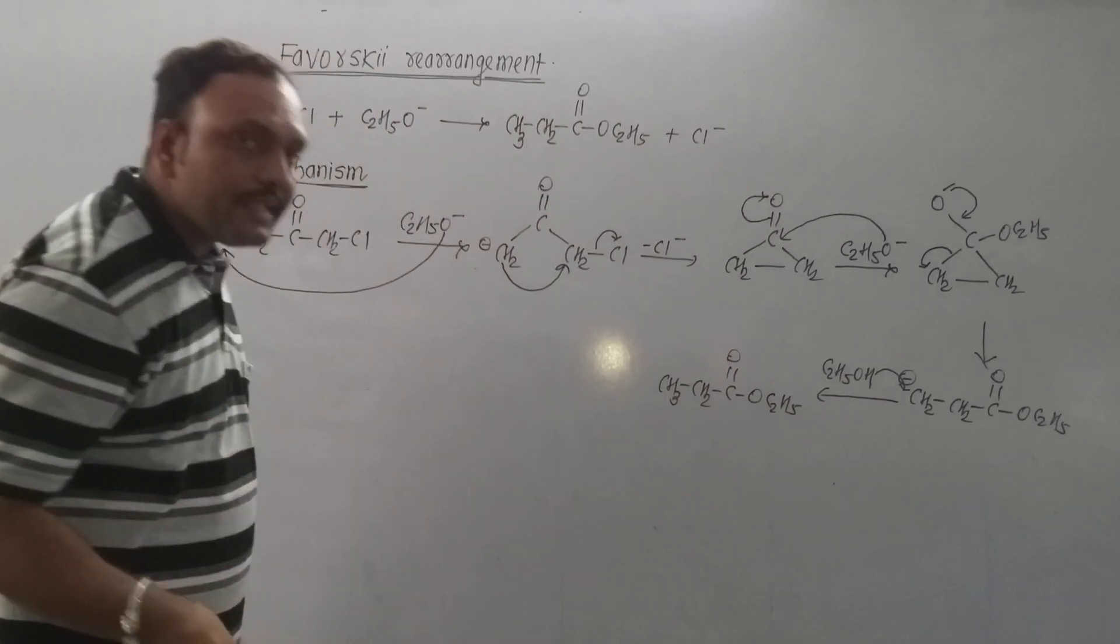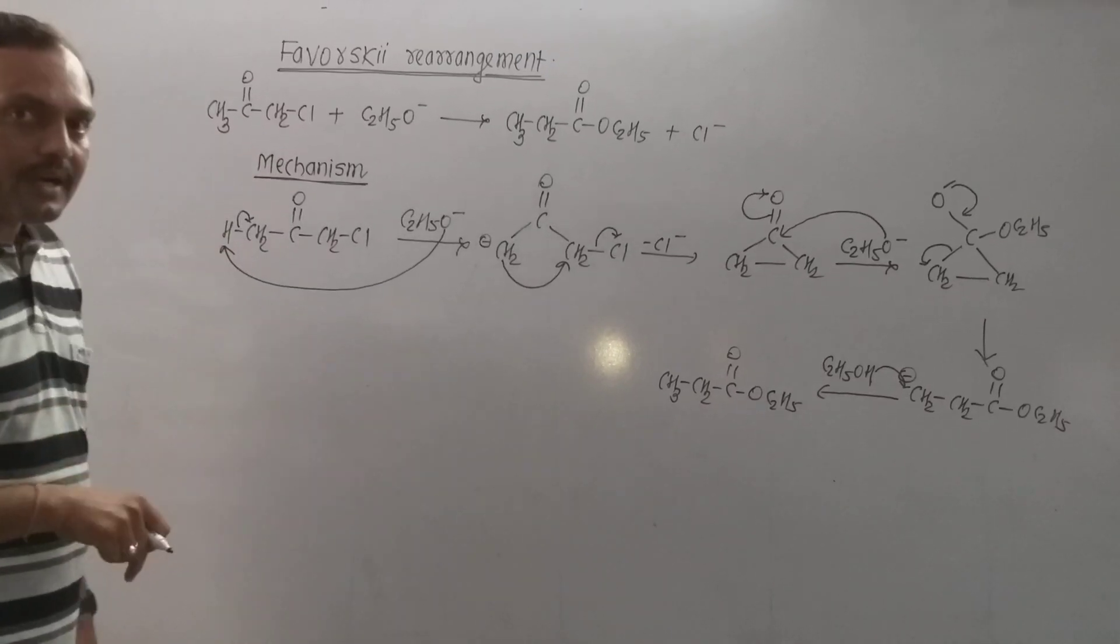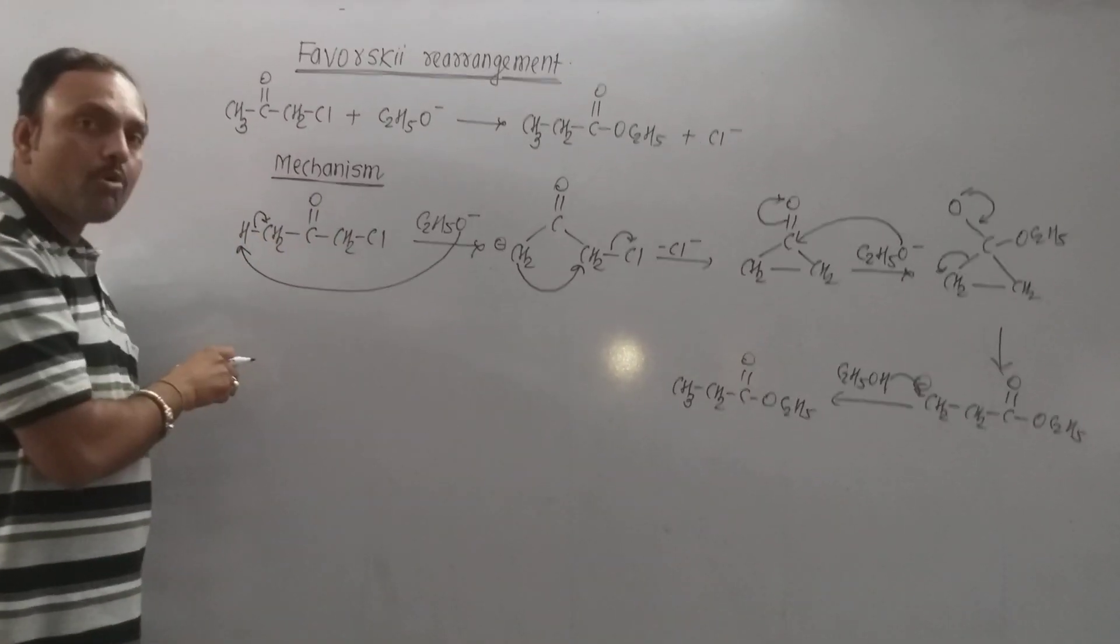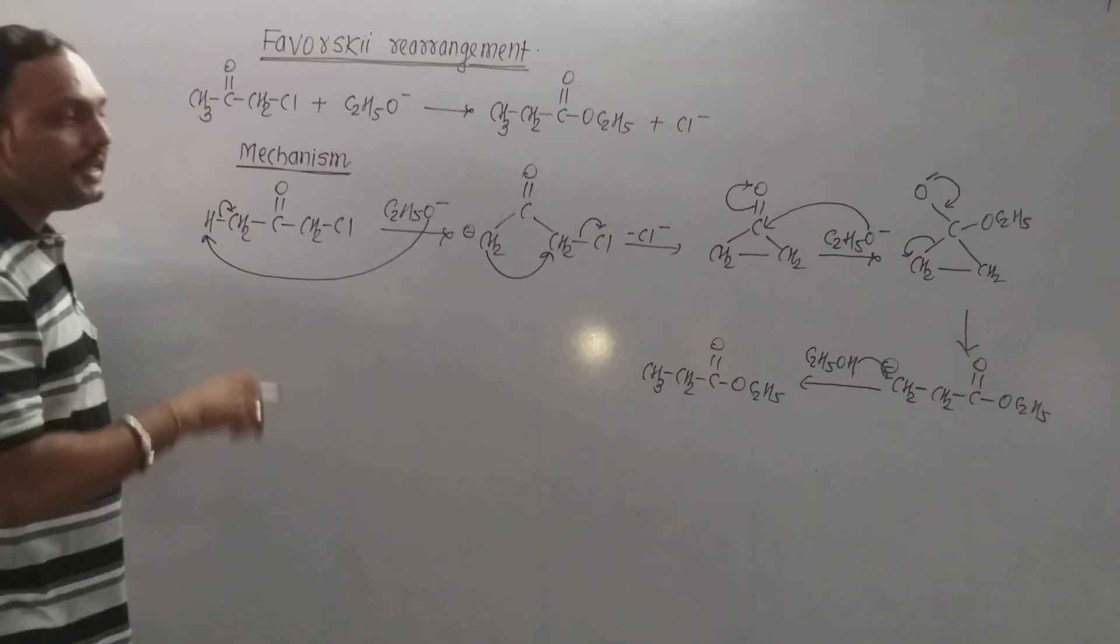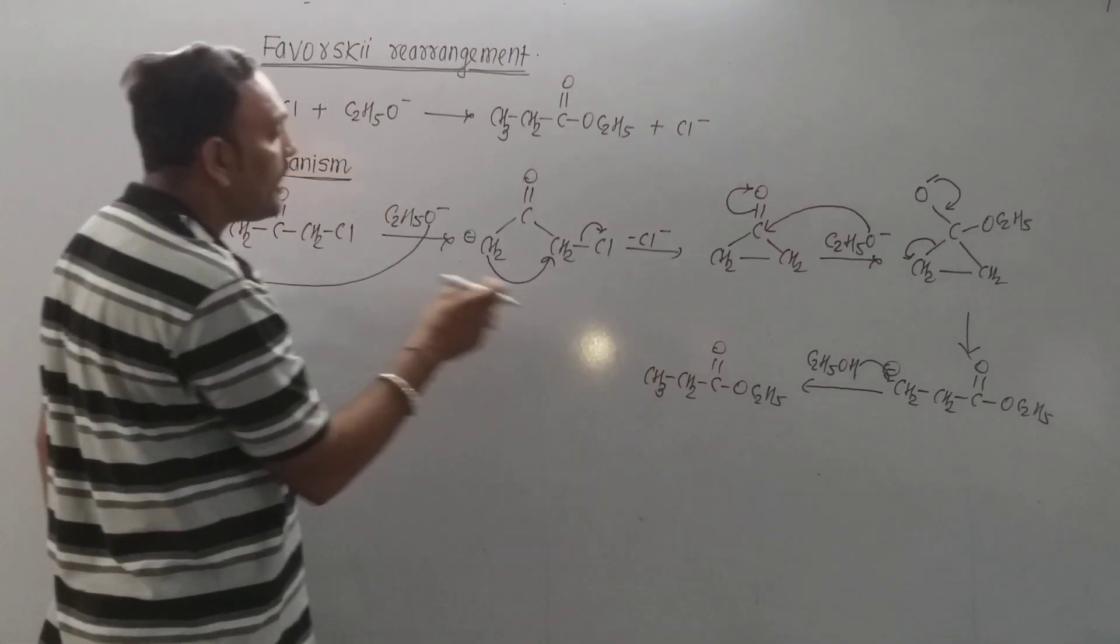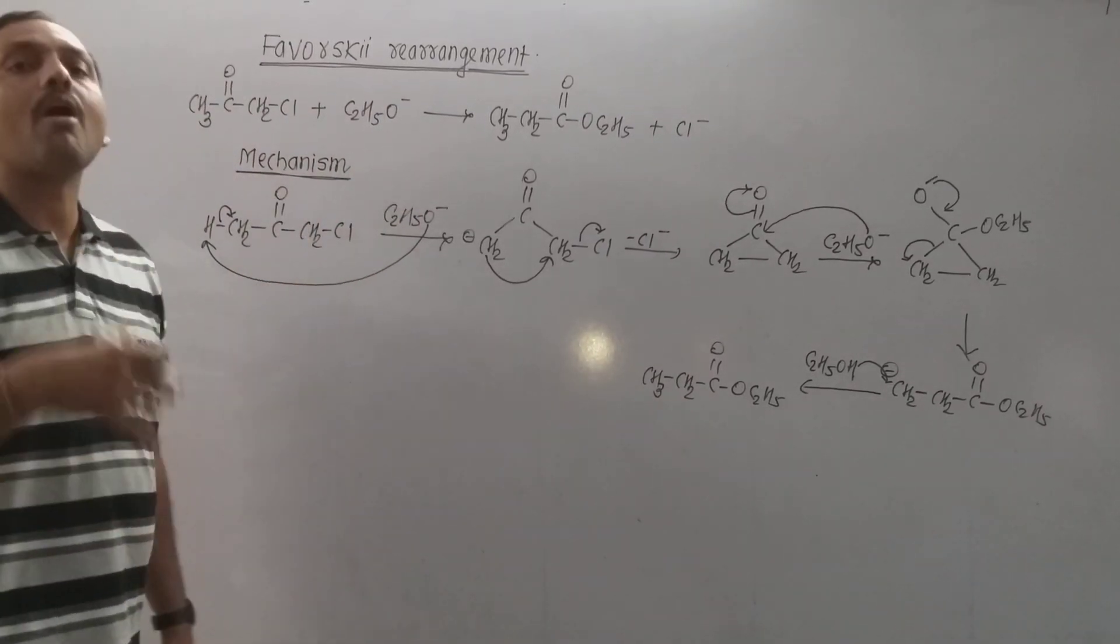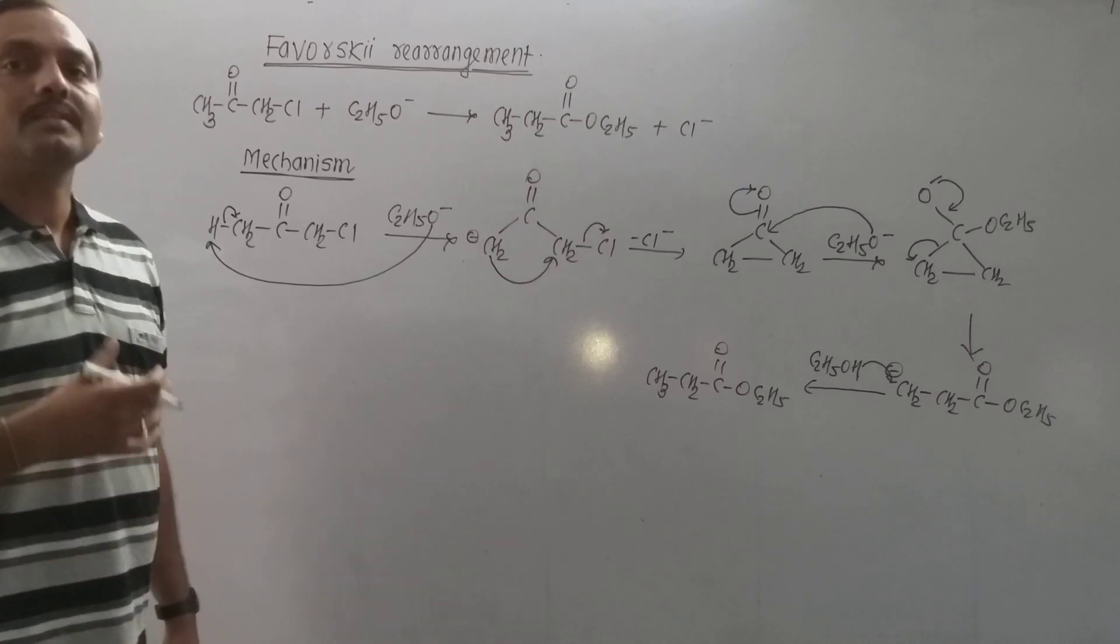In this way, one can convert alpha-halo ketones into rearranged esters by reacting with ethoxide ion or any alkoxide ion. Thank you very much.